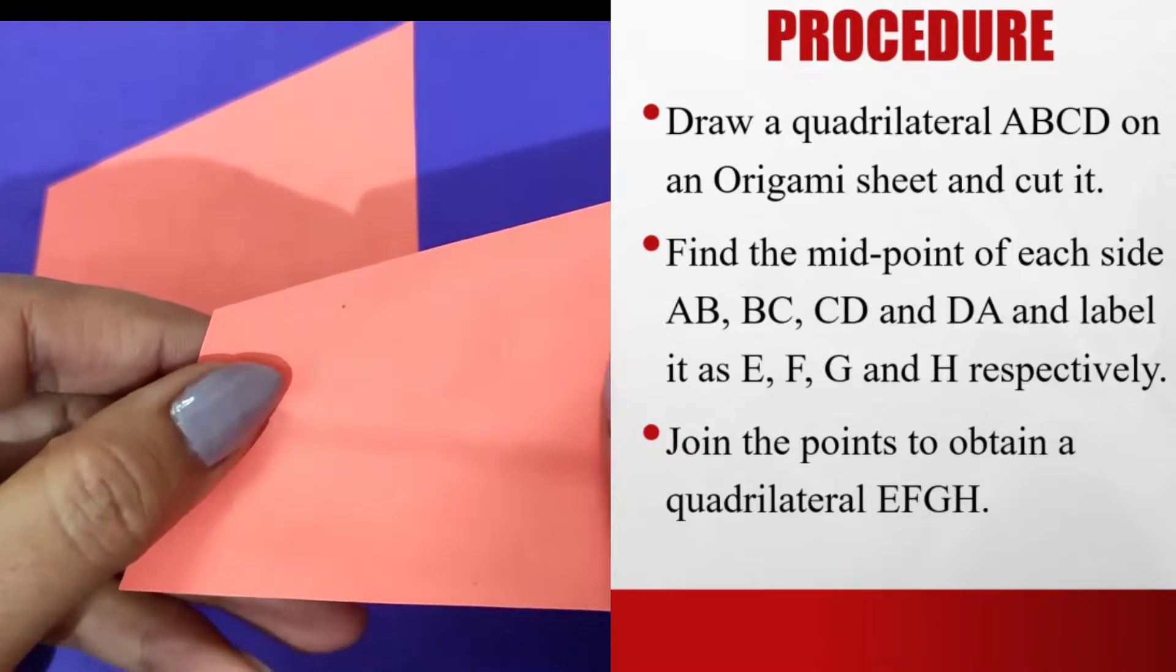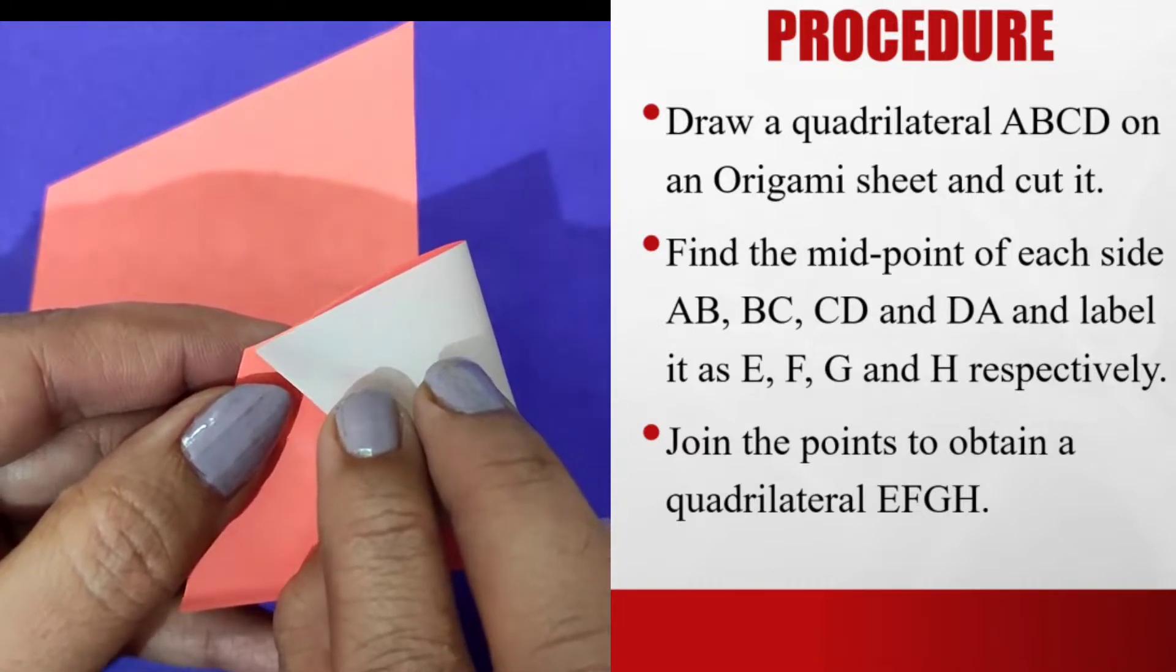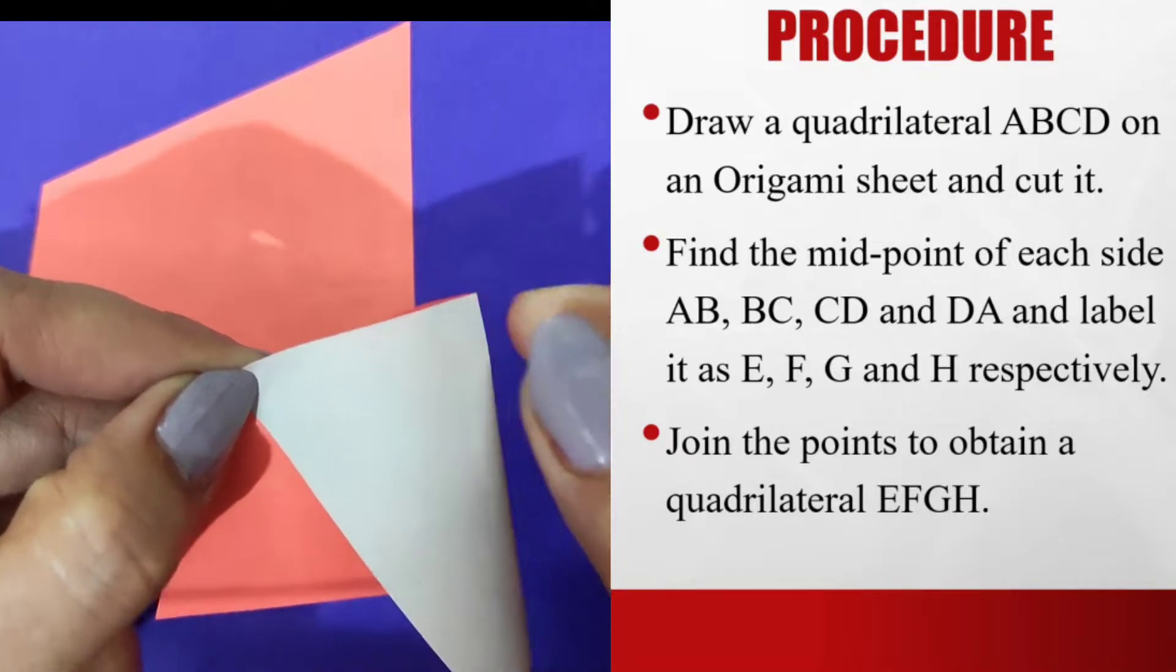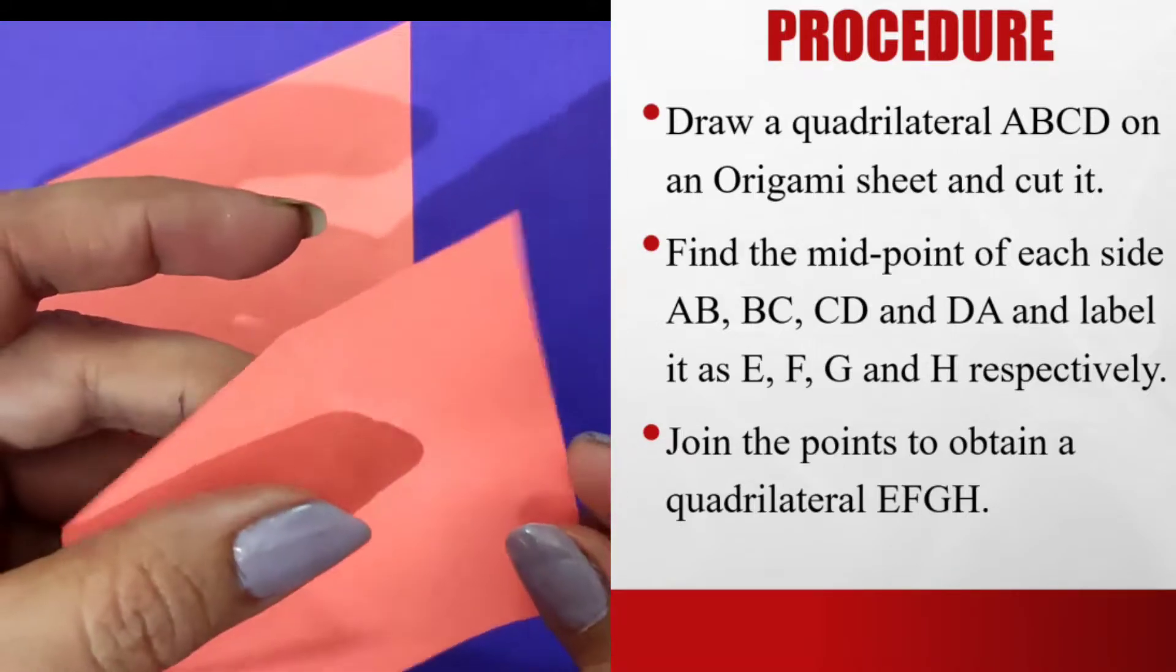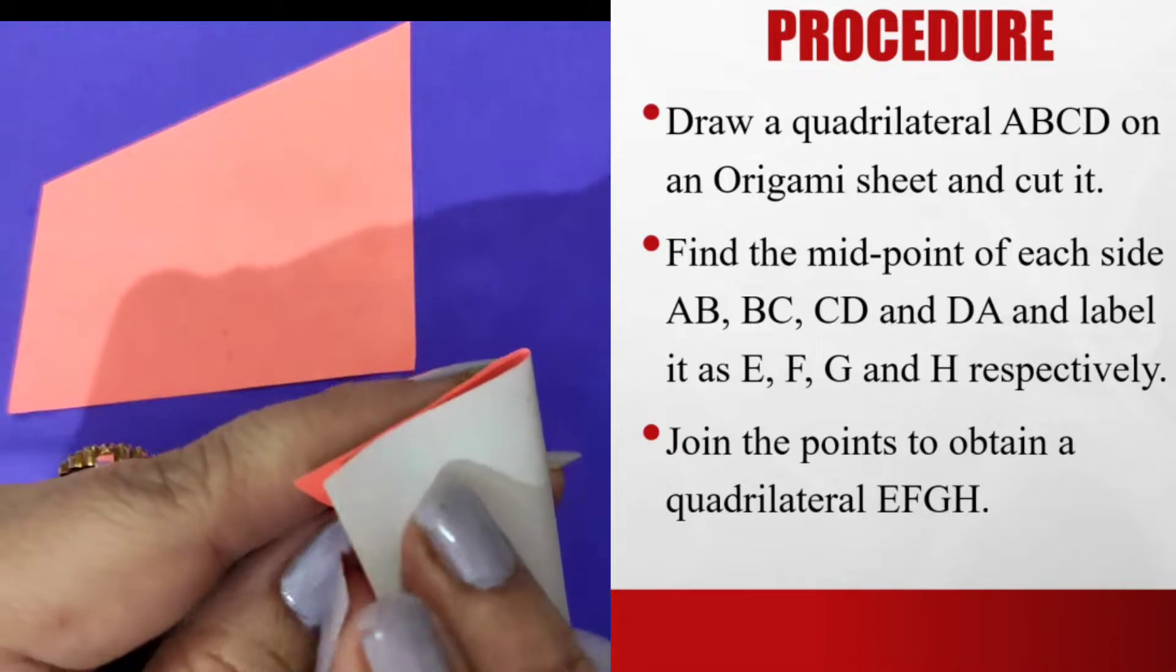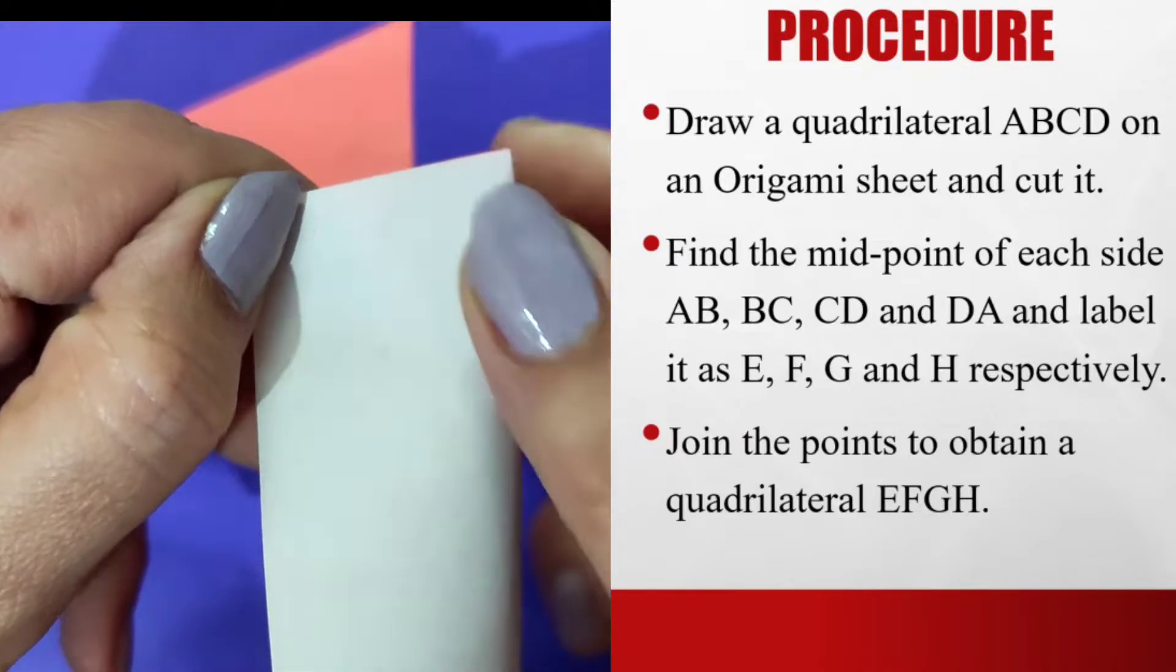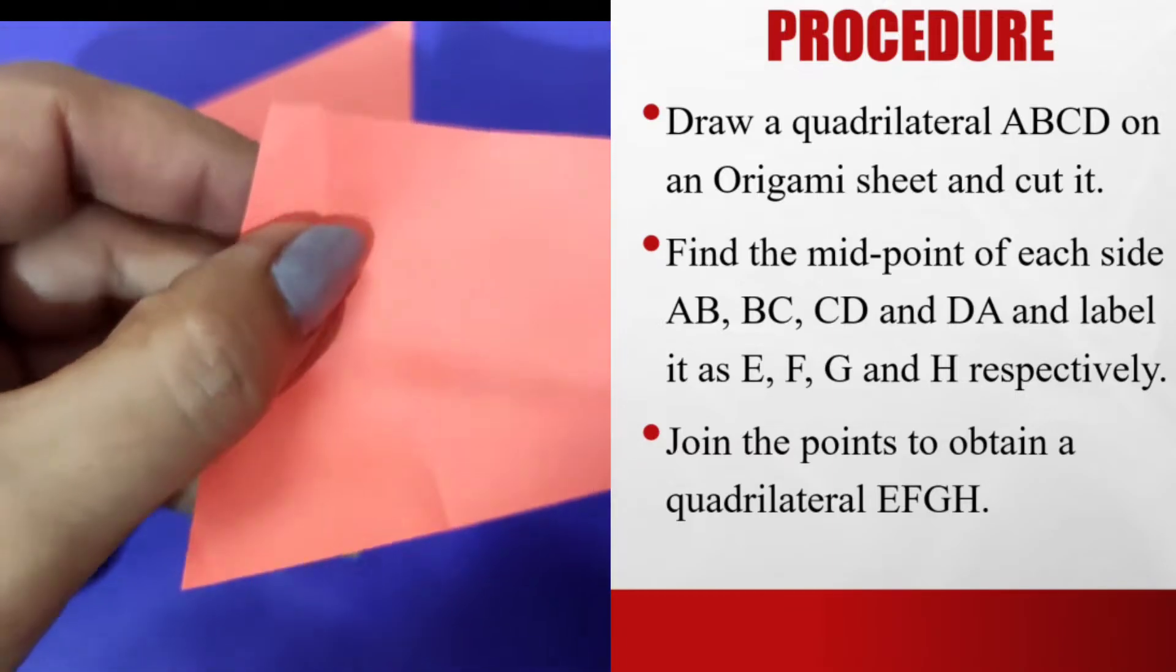I have got two identical quadrilaterals that have been cut out. Now what I do is I will just join the edges of the vertices of the quadrilateral and I obtain the midpoint. So this is one midpoint. This is the second midpoint. This is the third midpoint.